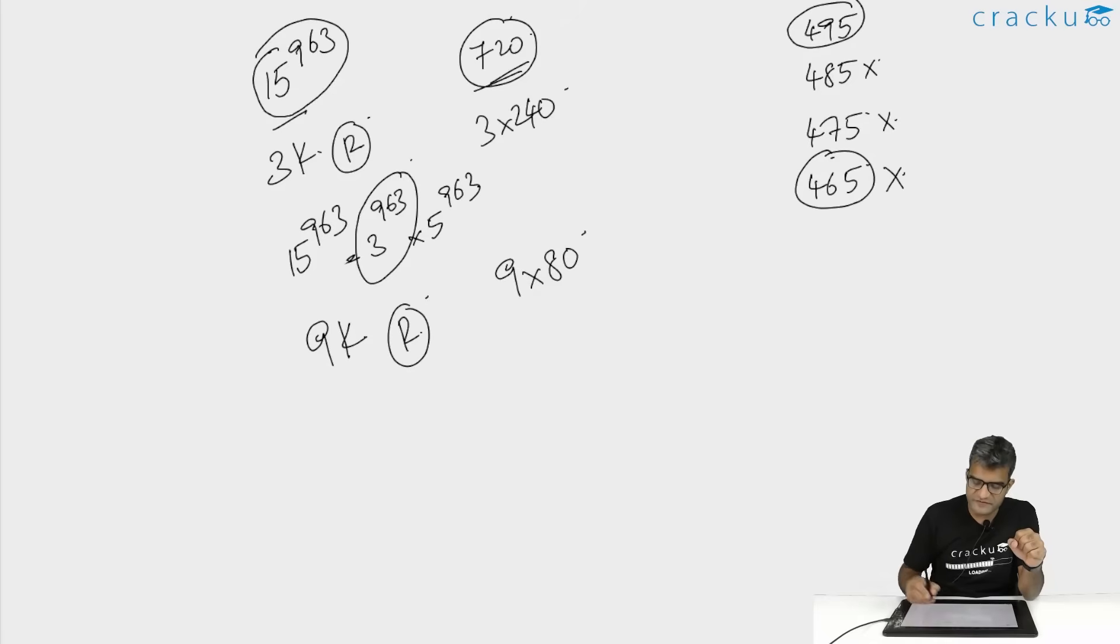Using this shortcut, I ruled out 465. 465 is a multiple of three, but it is not a multiple of nine. So the only multiple of nine which was given in the options is 495. So I ticked it and went ahead to solve the question.